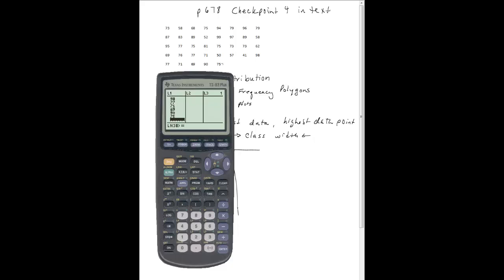Alright, I've gone ahead and typed those in. I didn't think you needed to see me type in 37 separate numbers. Now that I have it in there, I'm going to quit out of this screen. I want that data list sorted, in order from lowest to highest.